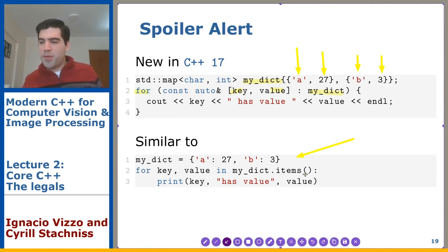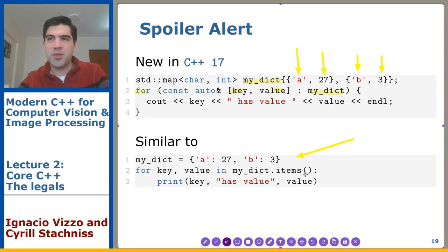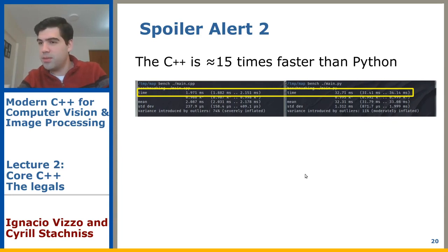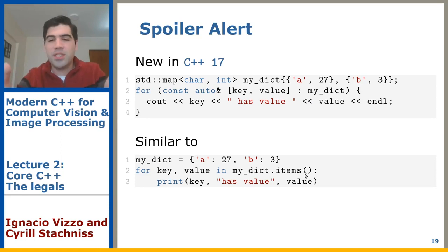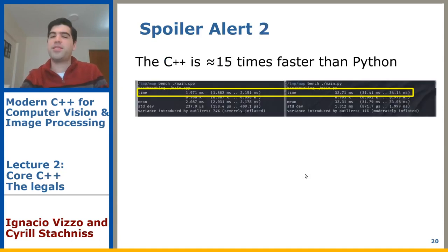Most people are scared about C++ because the syntax is more complex than Python, but the C++ standard is trying to improve readability over the years. With this example I want to show that you can do the same thing in Python and in C++. And spoiler alert: if you run these programs with the right optimizations, you'll find the C++ implementation is about 15 times faster — the price you pay is almost nothing in terms of extra syntax.